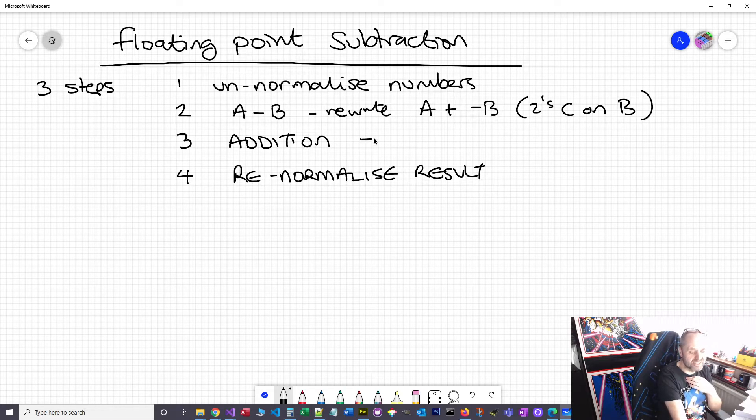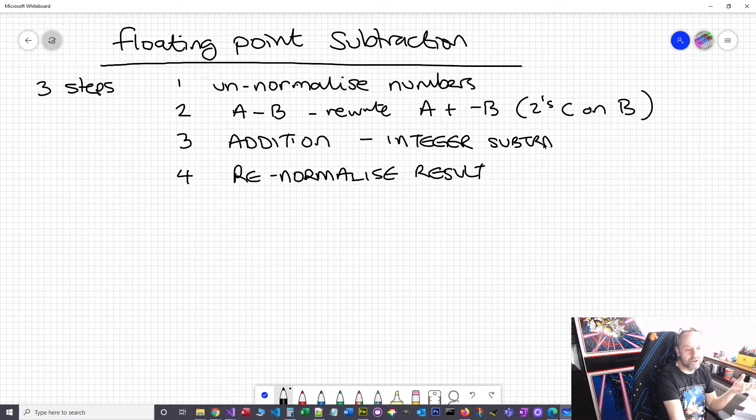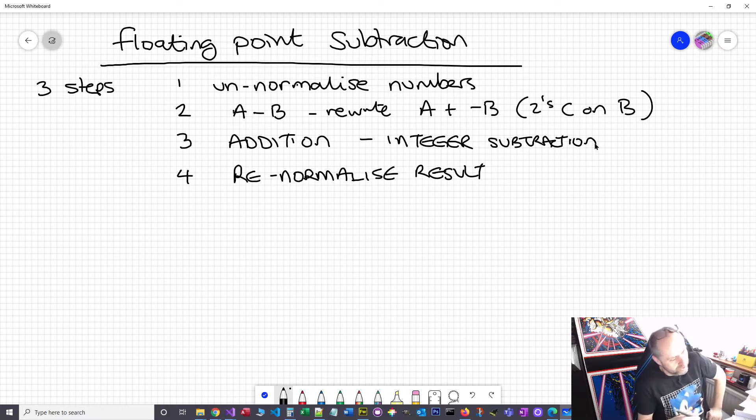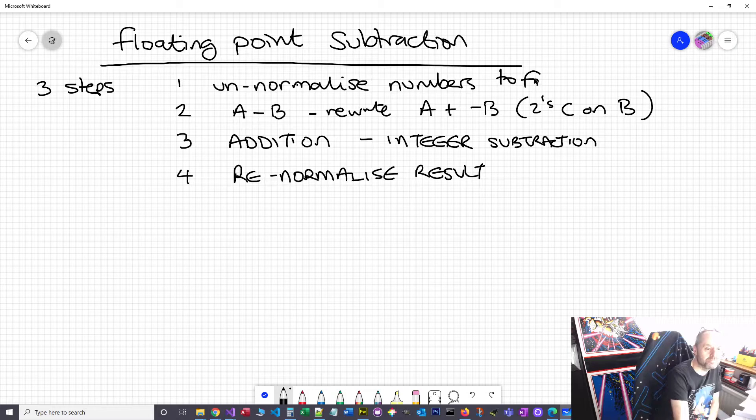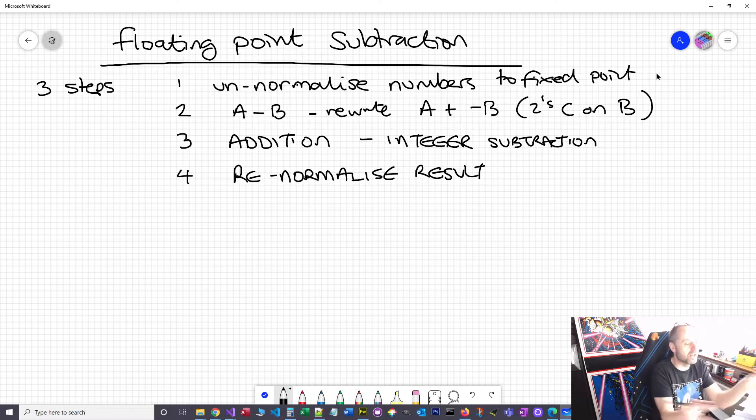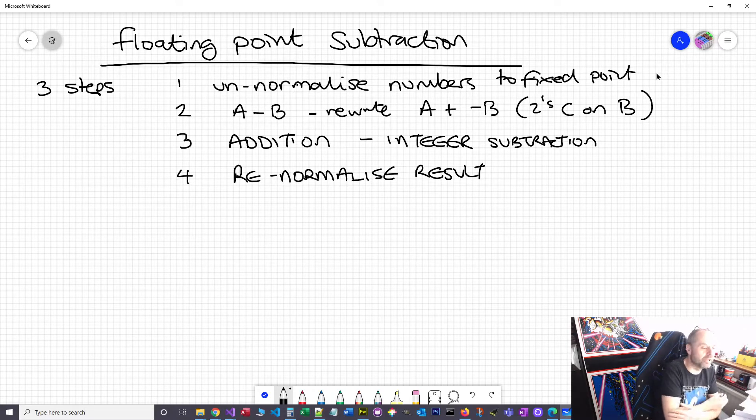Essentially, it's just integer subtraction that you're doing. You start with floating-point numbers, but because we go through the un-normalization process to get the raw fixed-point numbers, we just add them up and make sure the binary points are in the same place.